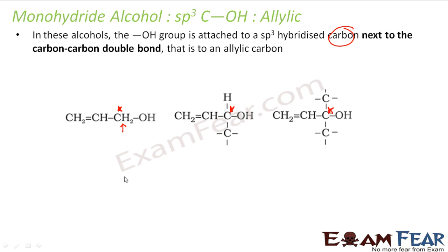If you see this carbon, it is sp3 hybridized — it has four bonds, so sp3. The other allylic star carbons here are also sp3 hybridized in the same way. Allylic alcohols are also generally liquid.